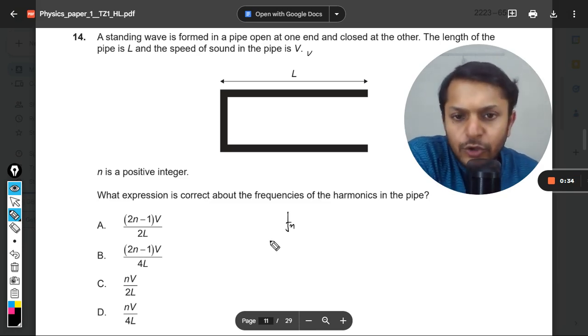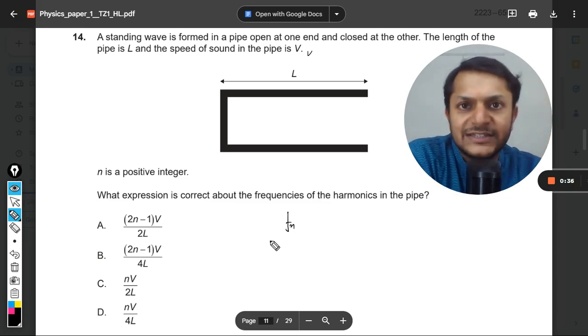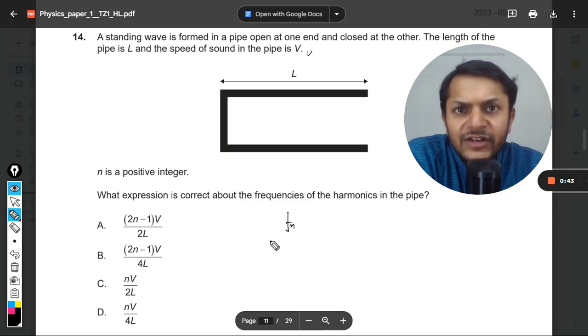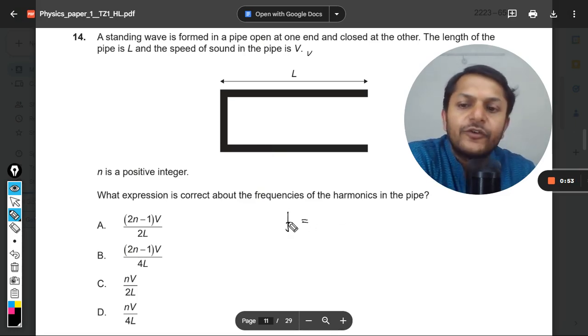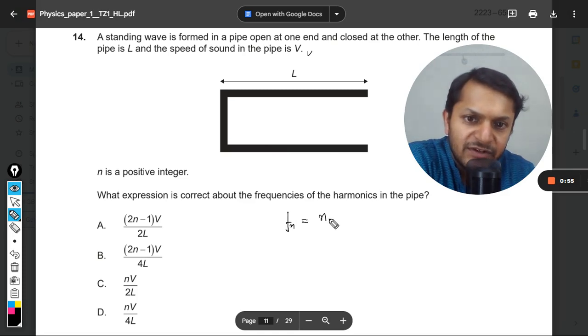So my dear students, as we all know, there are only two formulas for standing waves. We have done those formulas extensively in paper one, and all those questions are available on YouTube. When you are working with a pipe closed at one end and open at the other, the general formula for the frequency is given by N times V divided by 4L.